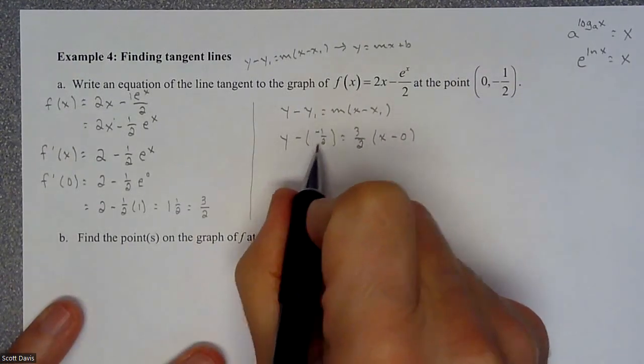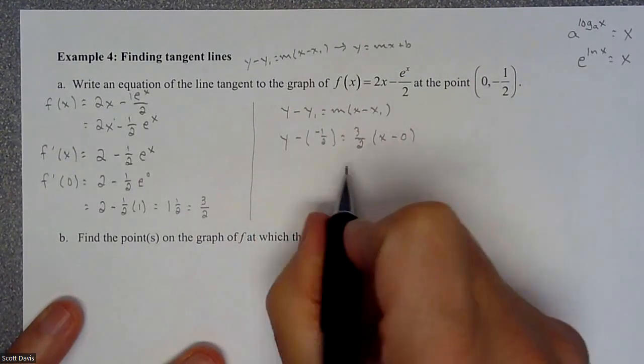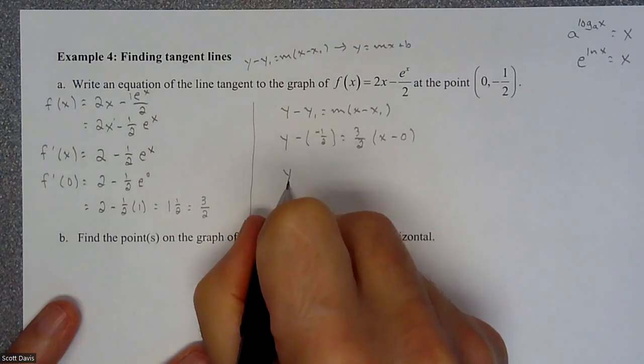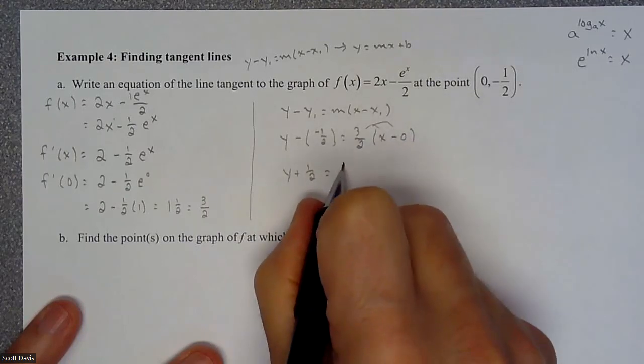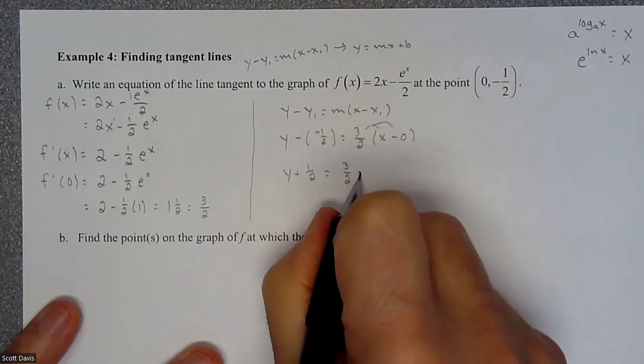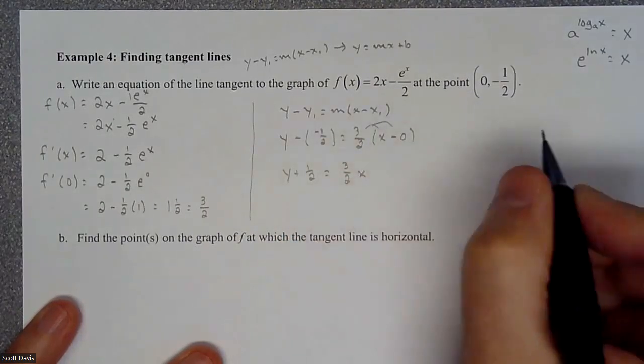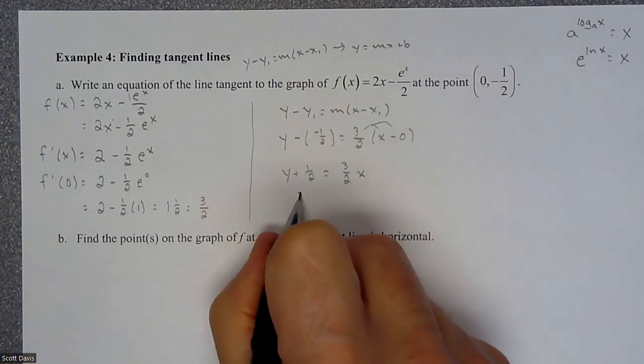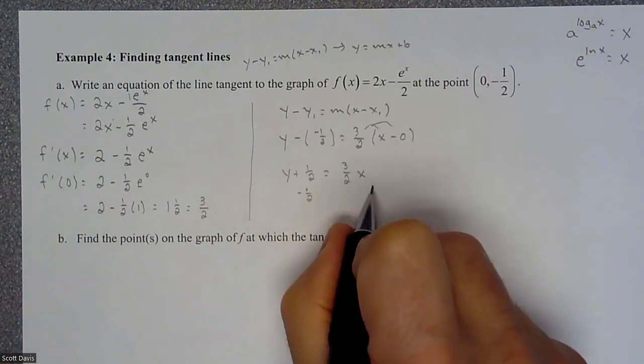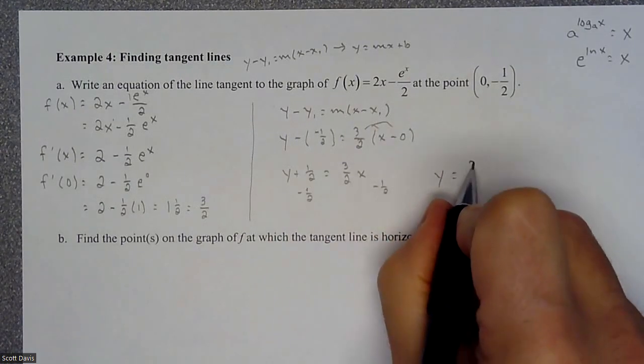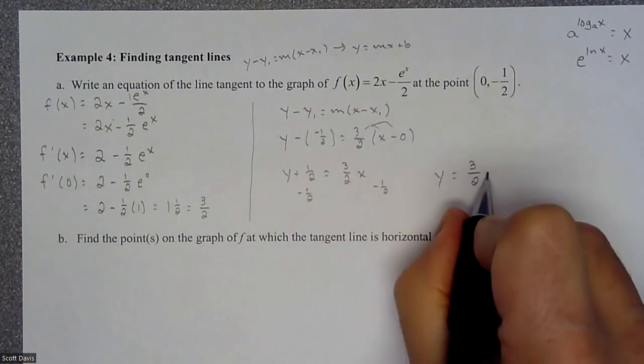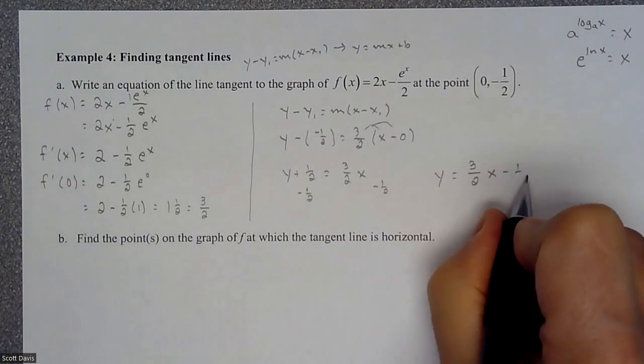So we'll distribute, we'll change our signs, we'll bump that over, and go ahead and get our equation. So we're looking at y plus 1 half equals 3 halves x. That's going to go away because of the 0. We'll subtract 1 half. And so our final answer is y equals 3 halves x minus 1 half.